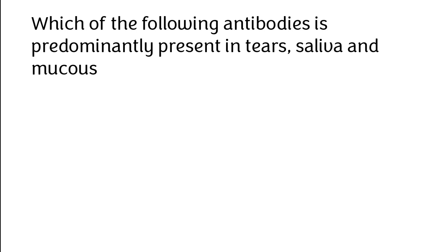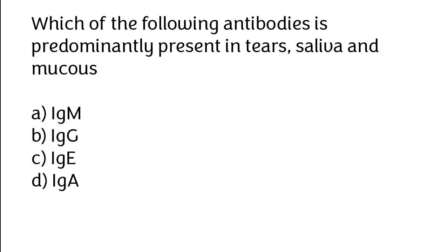Which of the following antibodies is predominantly present in tears, saliva, and mucus? IgM, IgG, IgE, IgA. The correct answer is option D: IgA antibodies are predominantly present in tears, saliva, and mucus.